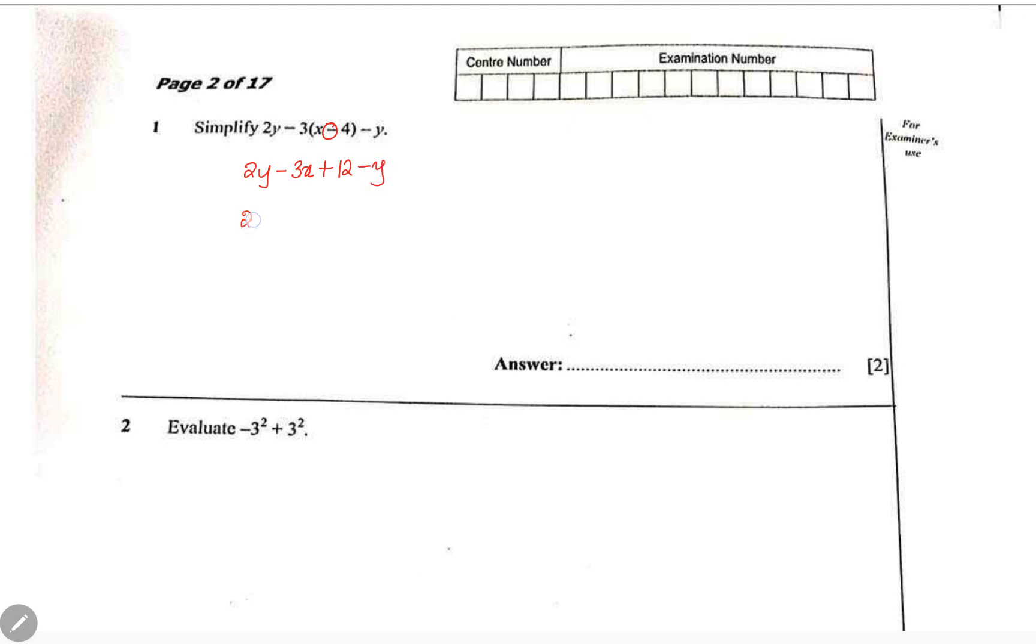So you say 2y minus y - these they've got y with them so put them together. We can see that 3x doesn't have anything like that, and the number 12 has no other partner, so leave them the way they are.